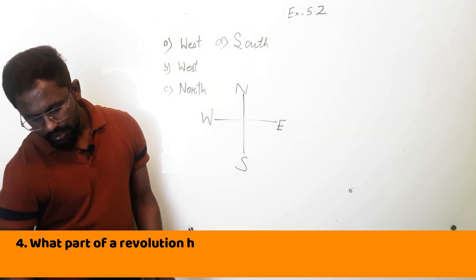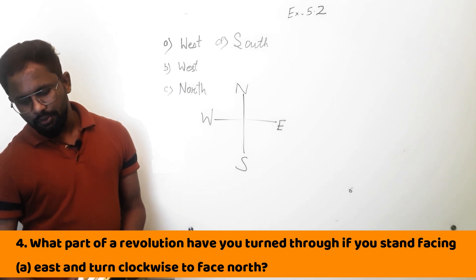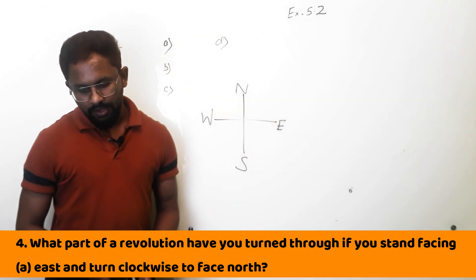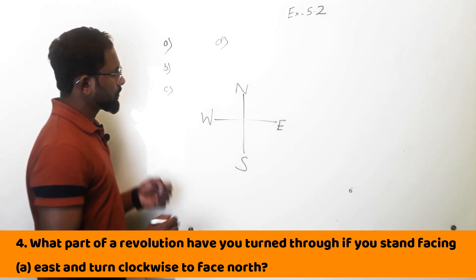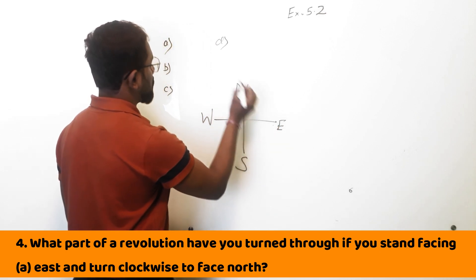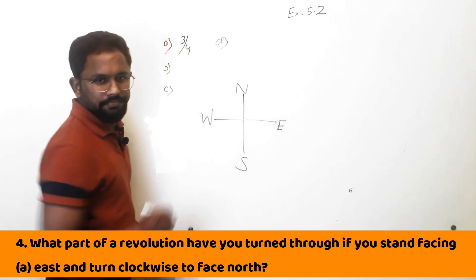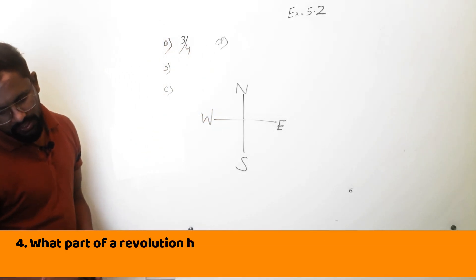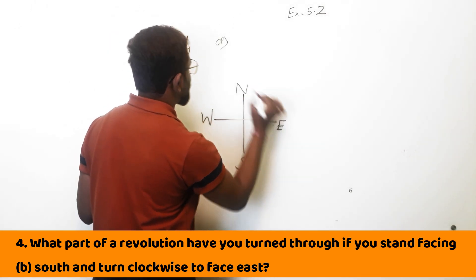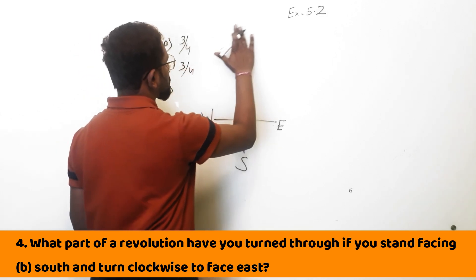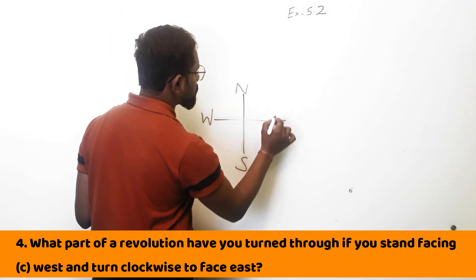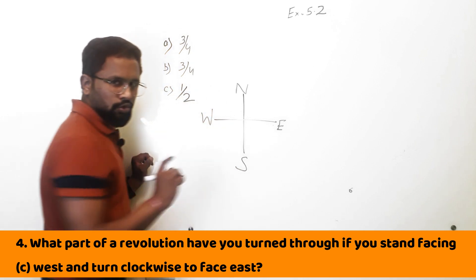Question 4: What part of revolution have you turned through? East turning clockwise to face north — it is 3 by 4 of the revolution. South turning clockwise to face east — again 3 by 4 of the revolution. West turning clockwise to face east — this is 1 by 2 of the revolution.